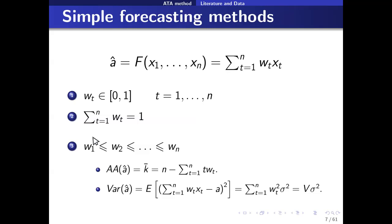Depending on the weighting scheme, simple forecasting methods can be compared based on two popular metrics. The first is the average age of the model, which represents the model's effectiveness in utilizing fresh data — the smaller the average age, the better. The second is the variance of the estimate, which we want to be small. This can be calculated by the summation of the squared weights, which we call V, times the constant variance.